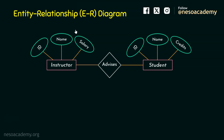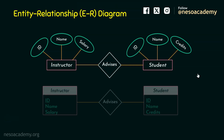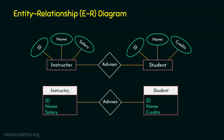There are some conventions that represent the ER Diagram in one way, but in this lecture series I'm going to represent it differently — with the entity name in the first half and attributes listed below it. So instructor with attributes ID, name, and salary, the advises relationship, and student with attributes ID, name, and credits. This is still a strong relationship because it is represented with a single diamond. A double diamond would indicate a weak relationship.